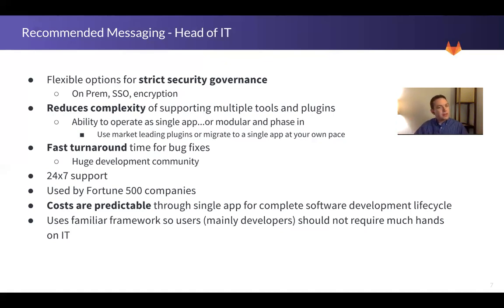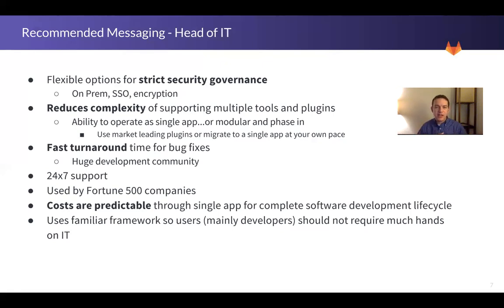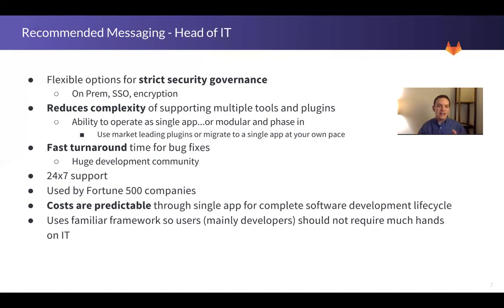They care a lot about uptime and don't want things to go down. The fact that GitLab is open source with a huge community fixing bugs — and even enterprise customers can submit patches that benefit all customers — means fast turnaround for bug fixes and stable software. Of course, 24-hour support, the fact that GitLab is used by 100,000 organizations and several Fortune 500 companies — those are going to play well with larger enterprises. They also care about predictable costs: our licensing is per user, so as they add users, they can have a predictable cost model. That is the head of IT.